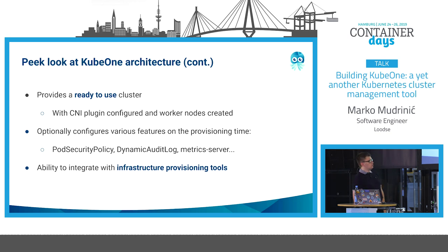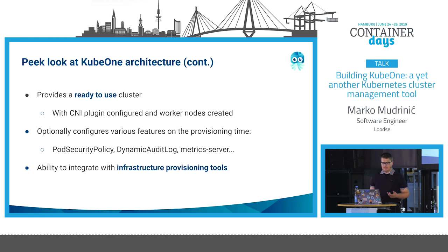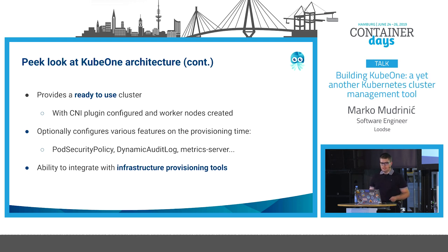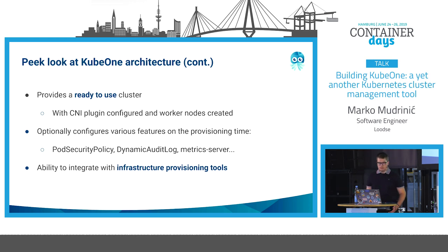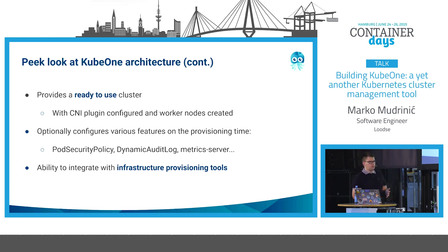When you install a cluster using KubeOne, we provide a ready-to-use cluster. With ready-to-use, we mean we deploy a CNI plugin - currently Weave Net and Canal are supported - and we create the worker nodes. We also support configuring various features like pod security policy, dynamic audit log backend, metrics server, and more. One important feature is the ability to integrate with infrastructure provisioning tools. Out of the box, you can integrate with Terraform, Ansible via templates, CloudFormation, and other infrastructure provisioning tools you already use.